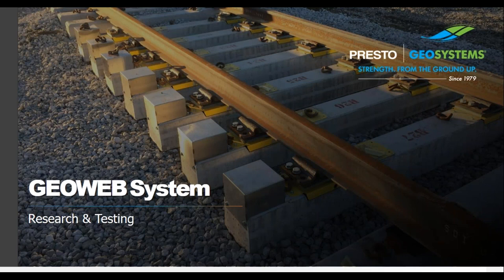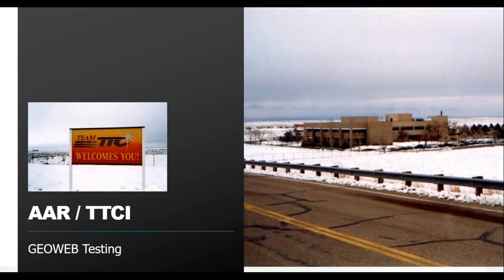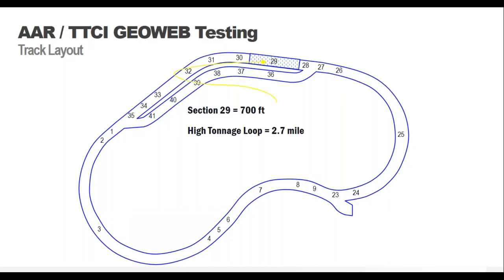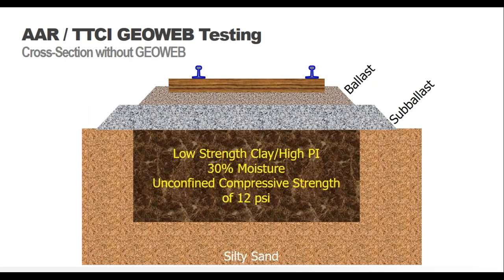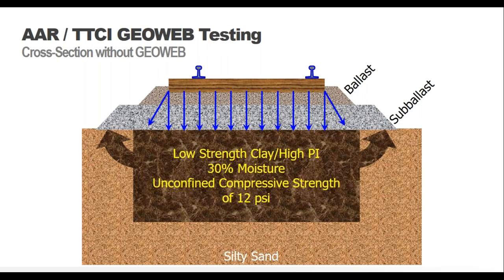The first rail research we completed was in the early 1990s at the TTCI Center outside of Pueblo, Colorado. TTCI provides research and testing for all aspects of railroad and associated equipment and has approximately 50 miles of track. The research was conducted on the fast high tonnage loop. Geo was installed in Section 29, a 700-foot section on the high tonnage loop, which is continuously loaded except when new materials are tested. This study ran two and a half years and was compared to a control section. The soil was a high-plasticity clay with CBR less than 3% and 30% moisture content.